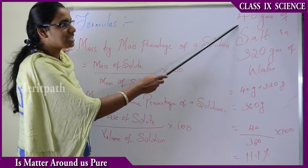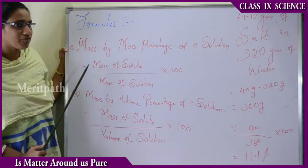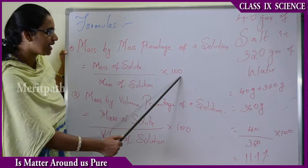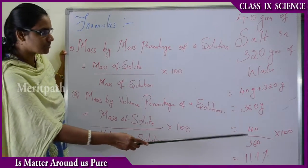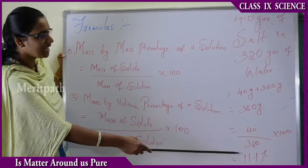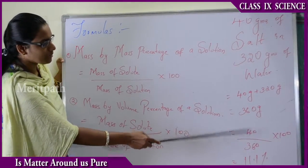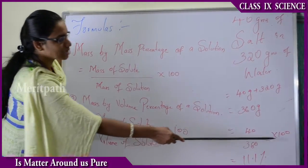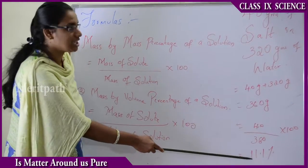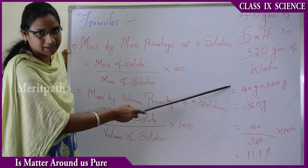The mass of solute is 40 grams. Dividing according to the formula — mass of solute by mass of solution into 100 — we get 40 divided by 360, into 100, which equals 11.1%. This is the solution percentage of the salt water.